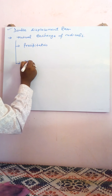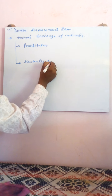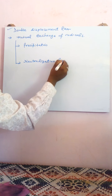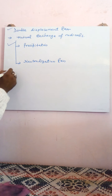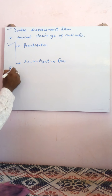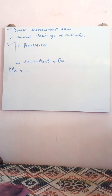Let us first understand precipitation reaction as a part of double displacement reaction. Precipitation reaction was explained in previous classes. When two solutions exchange their radicals to form an insoluble substance in the solution, the process is called precipitation, and the type of reaction is known as a precipitation reaction.